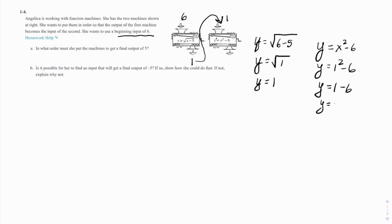Y would be negative 5. So if I use the machines in this order, I would get a 5 out. Clearly A can't be putting them in this order.